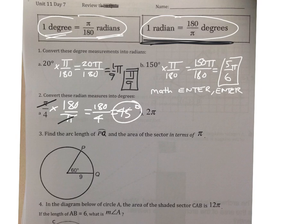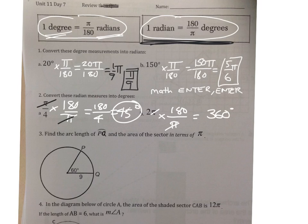For the last one, if you're given 2pi radians and want to write it as degrees, the conversion cancels out the pi's, and 2 times 180 degrees is 360 degrees.